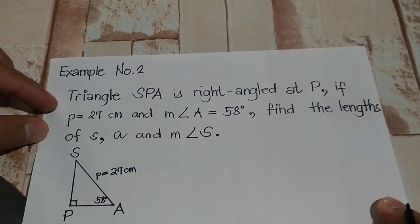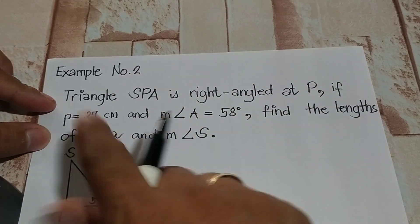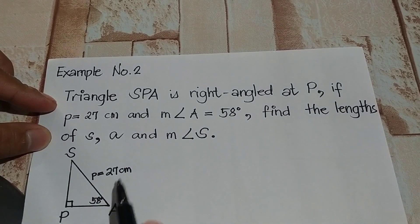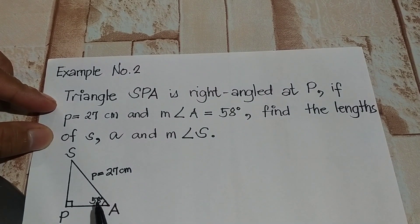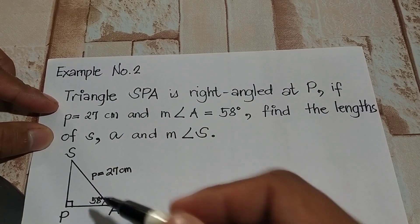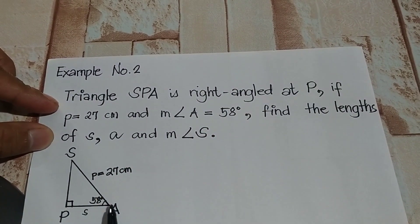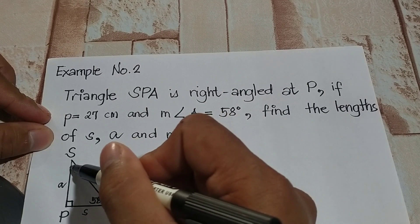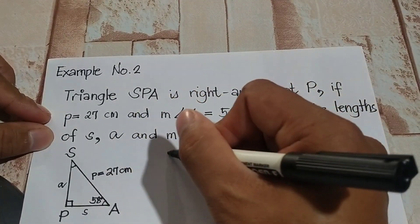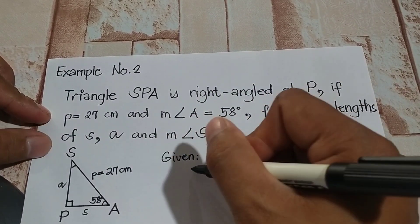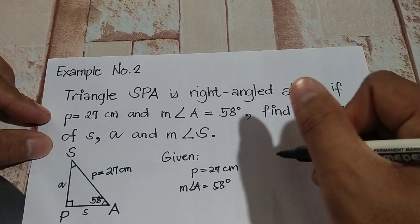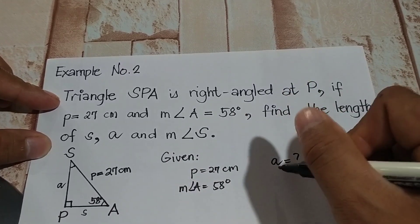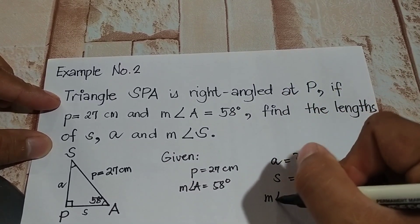Let's move on to example number 2. Triangle SPA is a right angle at P. Side P is 27 cm and the measure of angle A is equal to 58 degrees. Find the length of side S, side A, and the measure of angle S.